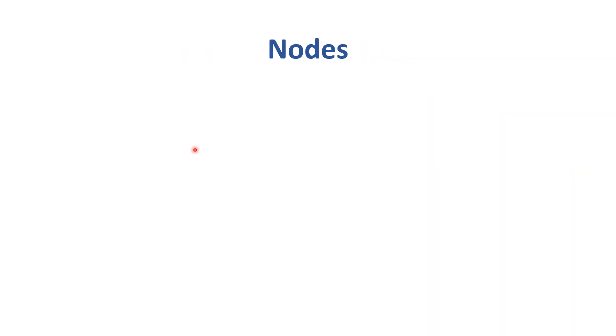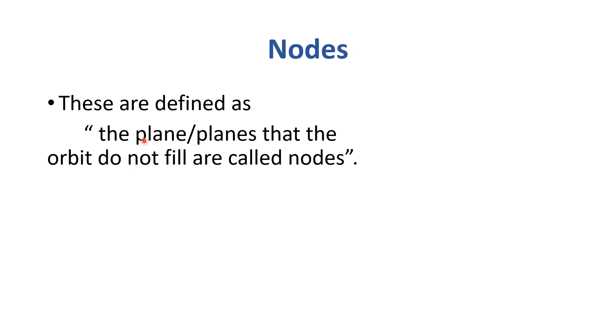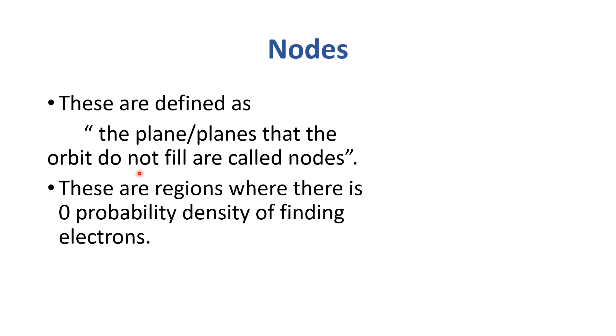Next, there is a term called node. These are defined as the plane or planes that the orbit do not fill are called nodes. These are regions where there is zero probability density of finding electrons.